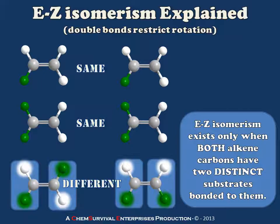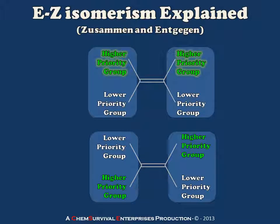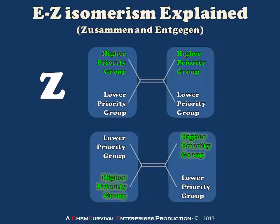Now let's take a look at an example. I'm going to name a couple of alkenes using the E-Z isomerism methodology, but first I'll explain how we identify higher priority and lower priority groups, because that's how we arrive at the designation of E or Z. When the higher priority groups are on the same side of the alkene double bond, we call this a Z isomer. When the higher priority groups are on opposite sides, we call this an E isomer.